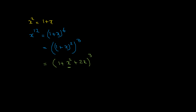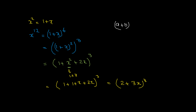We know x² equals 1 plus x, so by replacing x², we get (1 plus 1 plus x plus 2x)³, which gives (2 plus 3x)³. We now expand this using the cube formula: (a plus b)³ equals a³ plus 3a²b plus 3ab² plus b³.